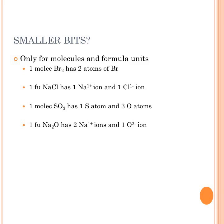One formula unit of Na₂O has two sodium ions (Na⁺) and one oxide ion (O²⁻). From subscripts: two Na ions per formula unit, one oxide ion per formula unit. You can write ratios such as one formula unit of Na₂O over two sodium ions, or one oxide ion over one formula unit of Na₂O.